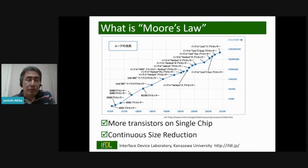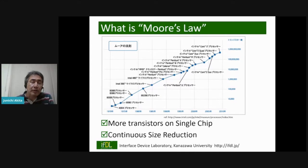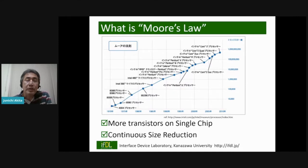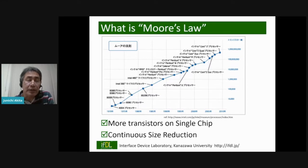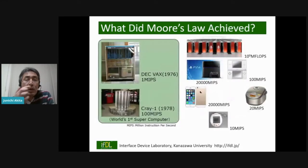Let me review Moore's Law. In terms of hardware, the new trend was predicted by Gordon Moore at Intel — that the number of transistors on a single chip will increase drastically year by year. This also requires continuous size reduction of each transistor on the chip.